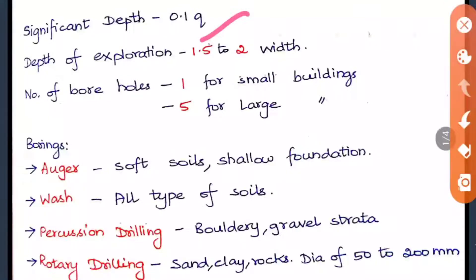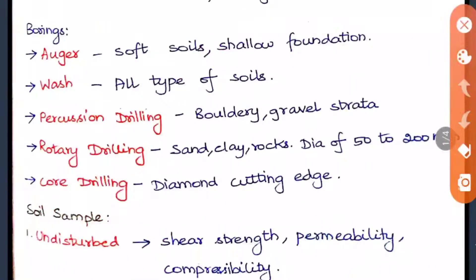The depth of exploration normally done in soil is 1.5 to 2 times the width. The number of boreholes to be made before constructing a building depends on its size and importance. For a small and less important building, one hole is enough. For a large and very important building, we go for 5 boreholes — one at the center and four at the corners.